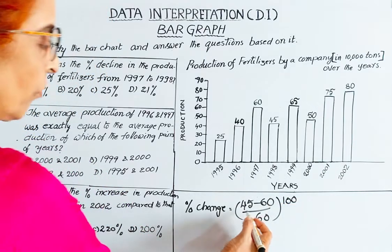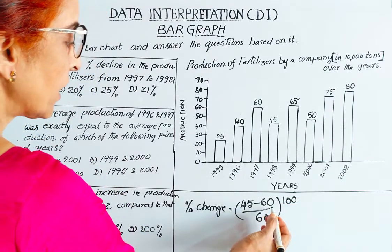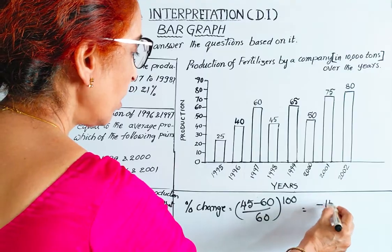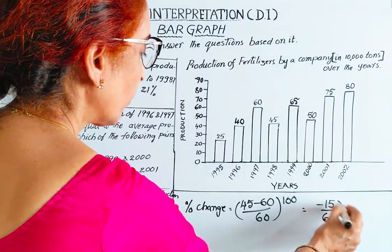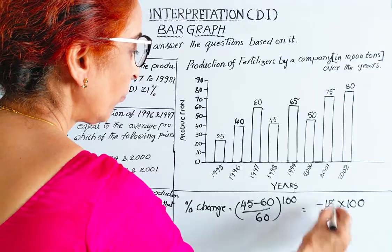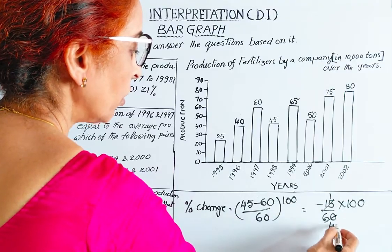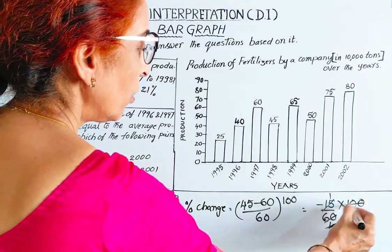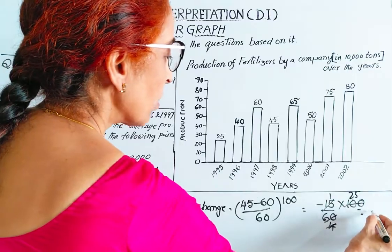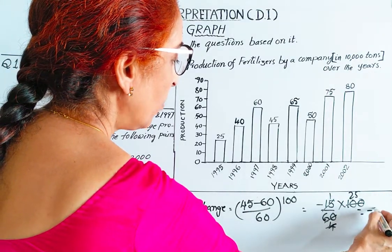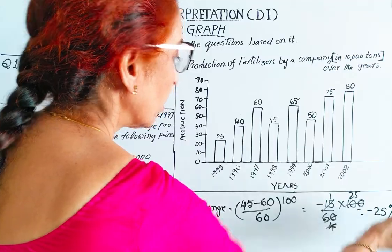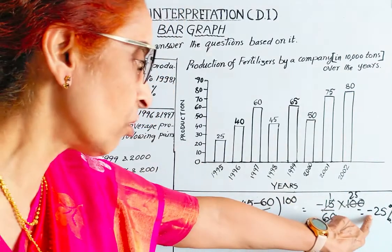45 minus 60 is minus 15. By 60 into 100. This 15 simplifies: 15 over 60 reduces to 1 over 4, and 100 divided by 4 is 25. So the result is minus 25%. The negative sign indicates a decline.